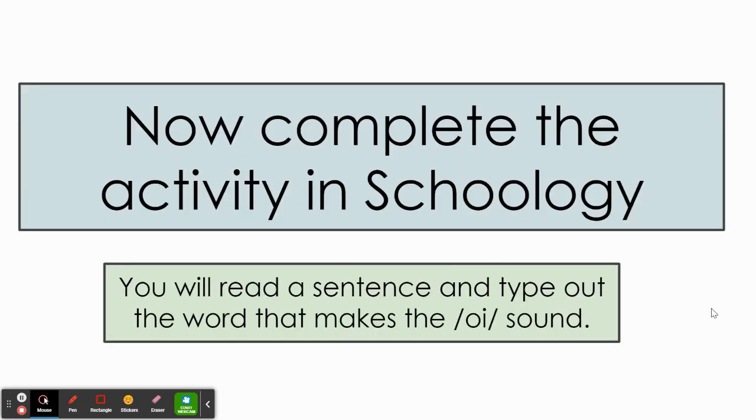You are now going to complete the activity in Schoology. You will read a sentence and type out the word that makes the o-y sound. So you will need to read the sentence and listen for which word makes the o-y sound. Then you will type that word into the box. Remember to click submit when you finish.